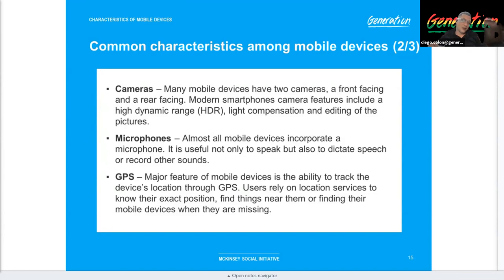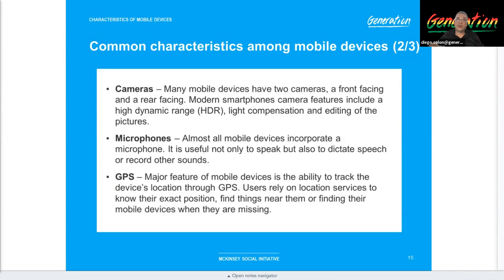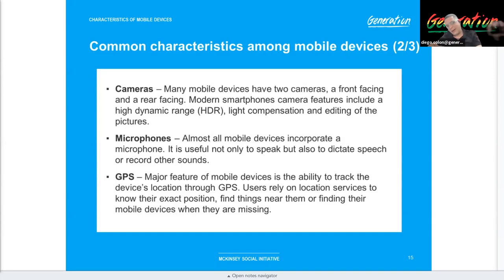The microphone allows us to convert from the analog world to the digital world and back through speakers. This is integrated into mobile devices — not only laptops but phablets and tablets all have integrated microphones. GPS only gives you coordinates — longitude and latitude. Your mobile data and the application installed on the device is what updates the map. Sometimes you can see your location dot but no map around it — that's because your data is slower than the GPS coordinates being received, and it's still downloading the map.